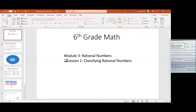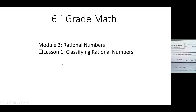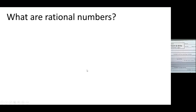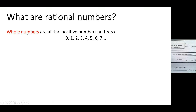This is the first lesson from Module Three. Module Three is called Rational Numbers, and Lesson One is called Classifying Rational Numbers. Let's back up and talk about all the number systems you know so far. Whole numbers are all the positive numbers and zero: zero, one, two, three, four, five, six, seven.